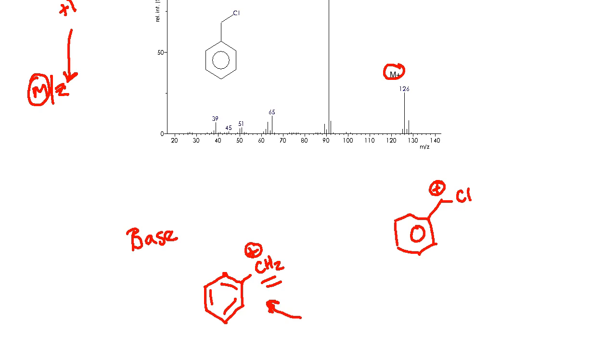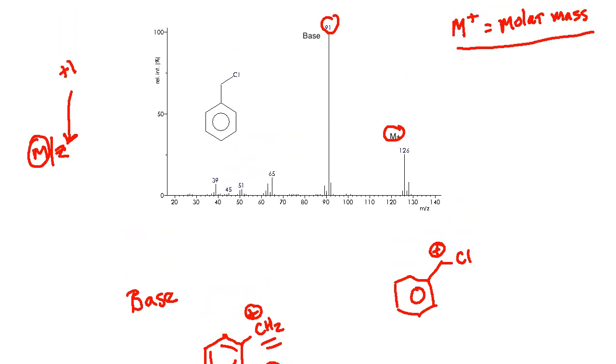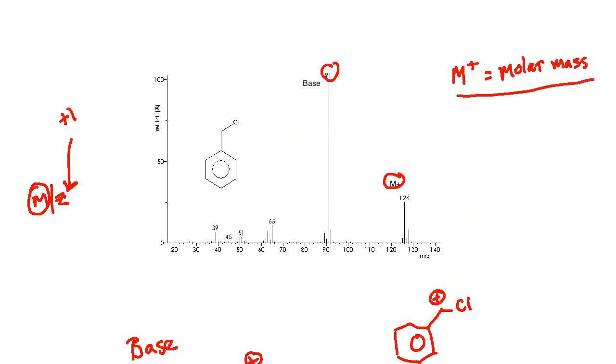It's the most stable fragment and therefore the one with the highest probability of being produced. So the base peak is really representative of your most stable cation.